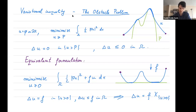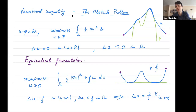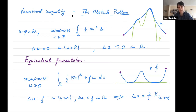On the other hand, globally we can only perturb u upwards, so we also obtain global information: u is harmonic where it separates from the obstacle, but also superharmonic everywhere. Often the obstacle problem is considered with zero obstacle — instead of working with u and p, we subtract p and work with u minus p. The equivalent formulation is to minimize, among non-negative functions prescribed on the boundary, the energy one-half gradient of u squared plus fu, where f represents a force acting on the membrane.